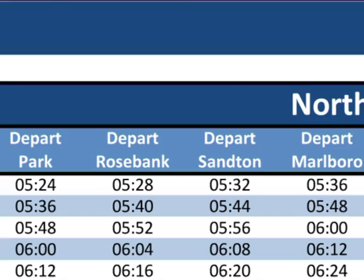Rosebank is on this line but OR Tambo is not. OR Tambo International Airport lies on the east-west line. Mindy will have to catch a train from Rosebank to Sandton station and then change train lines, and she will catch that train to the airport.